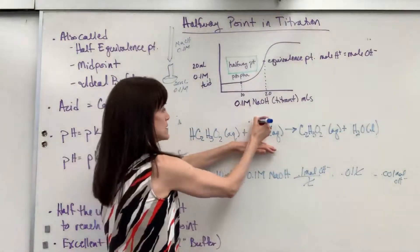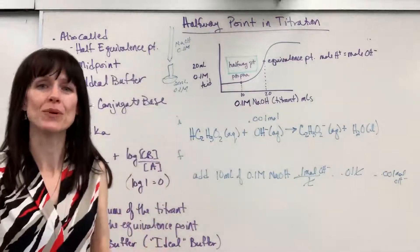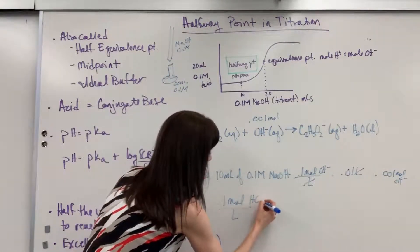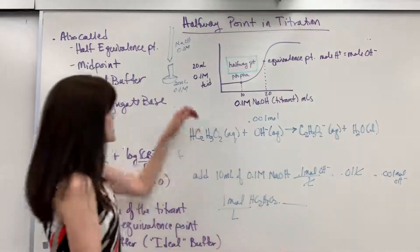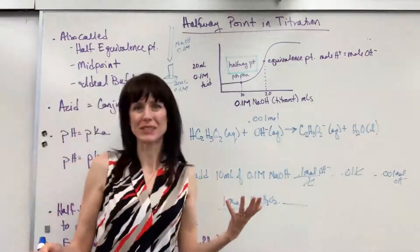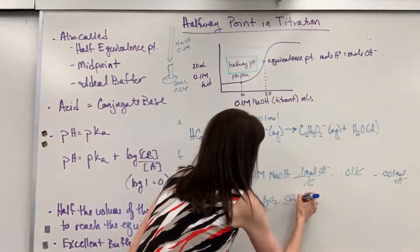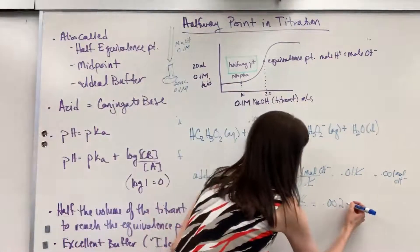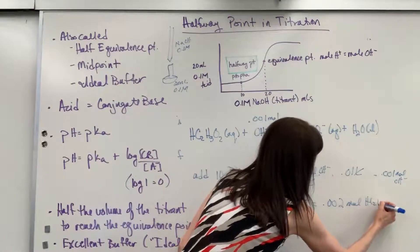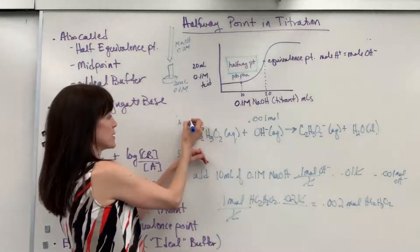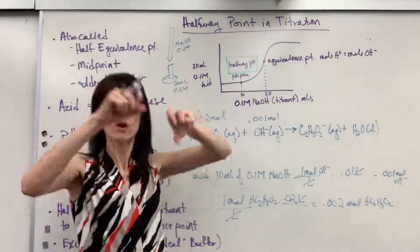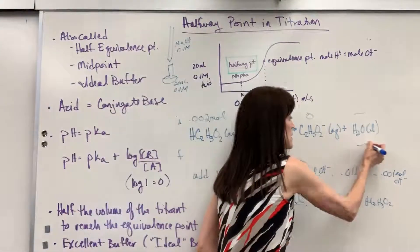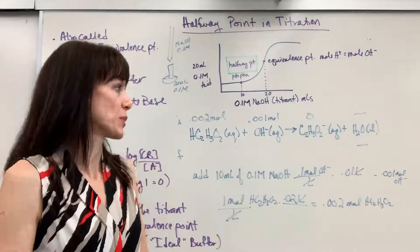Now let's find the moles of the acid. We have 0.1 mole per liter of the acetic acid (HC₂H₃O₂), and we start with 20 mils. Dividing 20 mils by a thousand gives 0.02 liters. Multiplying 0.1 by 0.02 gives us 0.002 moles of the acid. Before I add the sodium hydroxide, there is no acetate ion — that's zero. Water is not included in our equilibrium expression.